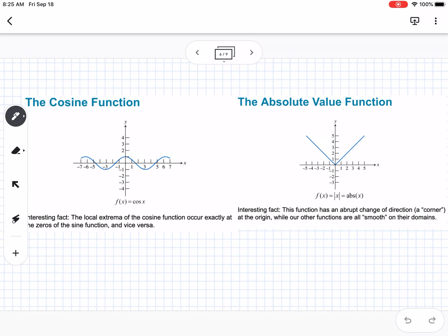The cosine function is f(x) = cos(x). Interesting fact: the local extrema of the cosine function occur exactly at the zeros of the sine function, and vice versa.